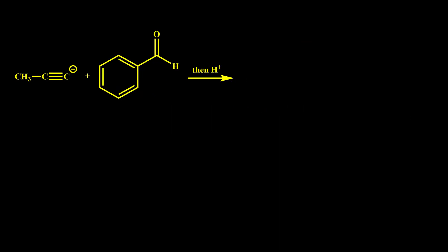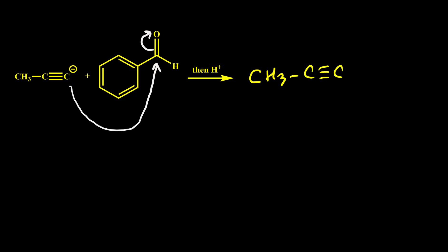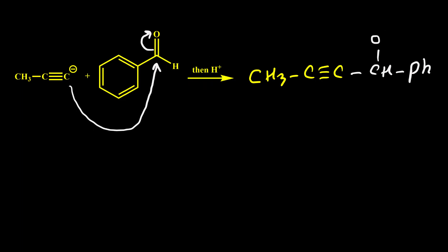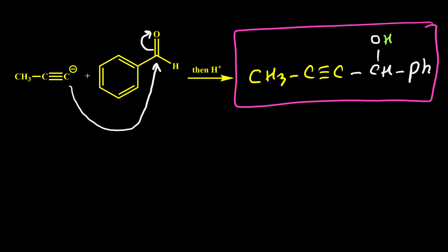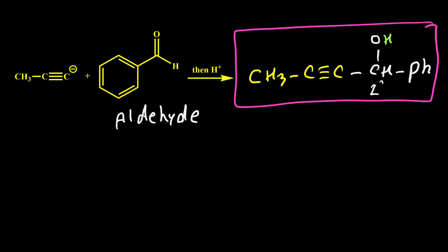Here is the next example. Again the nucleophilic carbon — this negative carbon — attacks the carbonyl group and pushes the pi bond to the oxygen. As a result here we have CH3 C triple bond C attached to CH O negative, and instead of drawing the benzene ring I just put a phenyl group. Then after acidifying the reaction, the negative oxygen turns to OH. So whenever we use an aldehyde other than formaldehyde in this reaction, our product is a secondary alcohol.